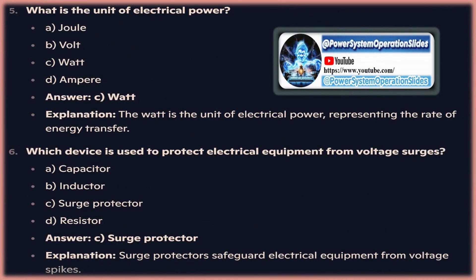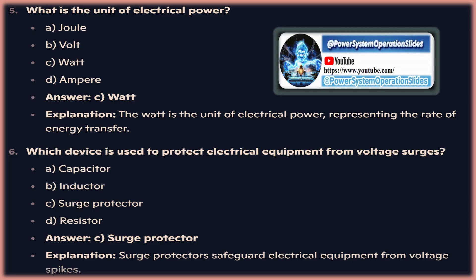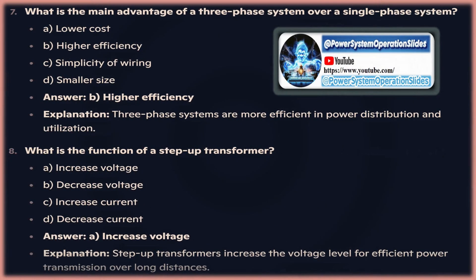If the frequency value is less than the nominal one, additional generation capacity needs to be started, while if the frequency value is higher than the nominal one, some generation capacity must be stopped, or the load has to increase. The secondary control is usually performed in an automatic way by all the generators that participate in this regulation through specific set points sent by a central controller. A figure shows an example of the first two levels of control after a frequency event in the system. The green line and the red dashed line show two different responses according to the inertia level of the system — power systems with low generation produced by rotating machines will have low inertia level.